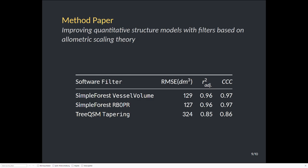You can just see here the published accuracy table. R-squared adjusted is close to one with the two SimpleForest filters, and the TreeQSM method reaches 0.85. It's a significant improvement. The root mean squared error drops to 130-ish from 320, and I am really happy to reach those good results.